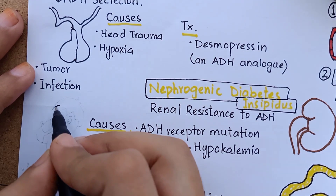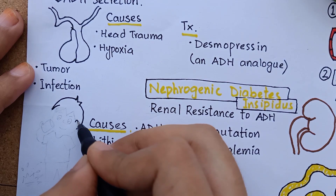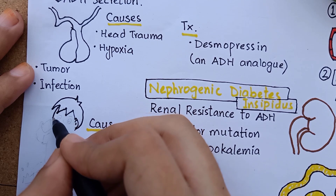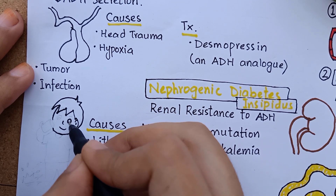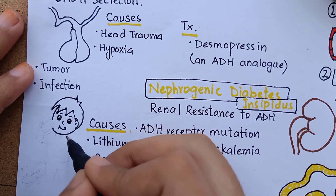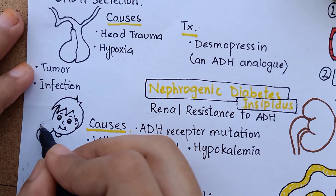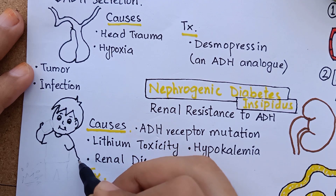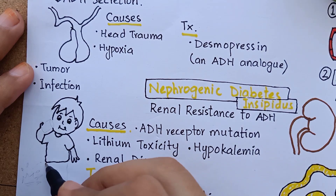Because of low levels or resistance to ADH, the distal segment of the renal nephron cannot reabsorb water, resulting in excessive water loss in urine. Excessive loss of water from the body makes blood plasma highly concentrated. This hyperosmolar state activates the thirst mechanism. So as long as the person drinks enough water, it compensates for fluid loss. But if fluid intake is restricted, severe dehydration can rapidly occur.